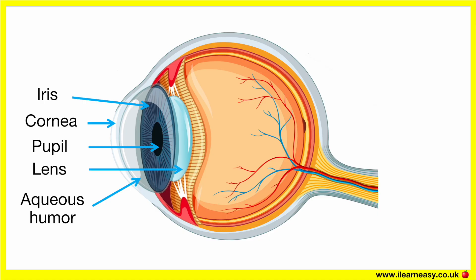Lens. The lens is a clear, flexible structure behind the pupil. It functions to fine focus light onto the retina by changing shape in order to adjust focus. The lens gets thicker to focus on near objects and thinner to focus on far objects. This function of focusing is called accommodation.